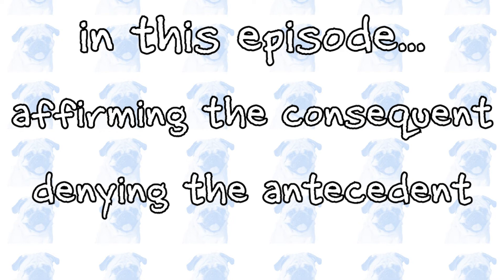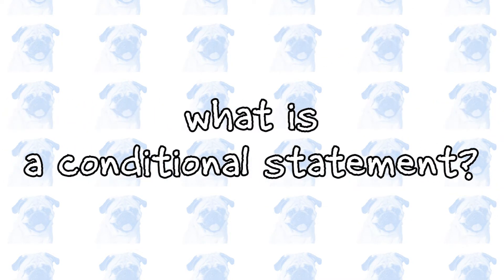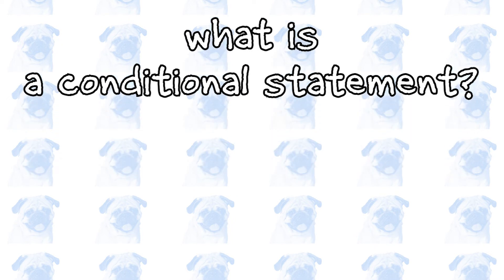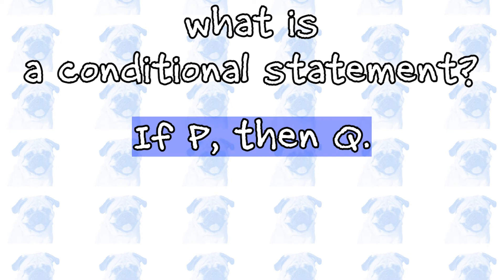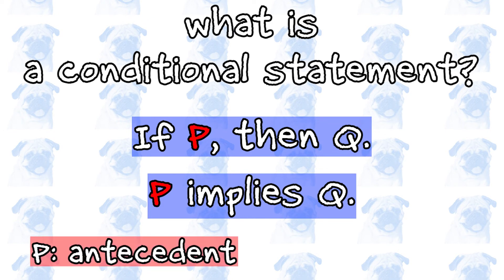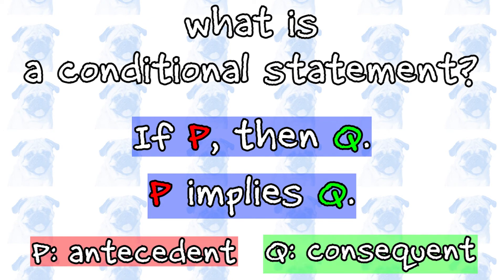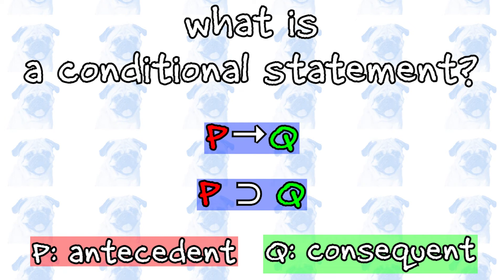Before we delve into these fallacies, however, we need to make a brief detour to define what a conditional statement is. Conditional statements are in the following form: If P, then Q — or, alternatively, P implies Q. The statement P is called the antecedent, whereas the statement Q is called the consequent. In formal logic, this relation may be represented by the right arrow or the superset symbol.